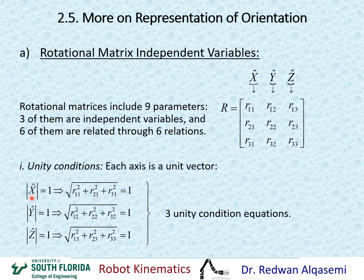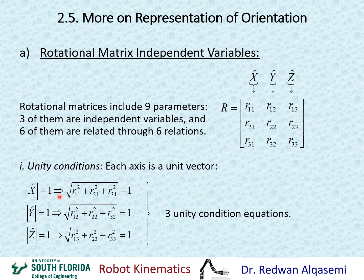The length of X should be one, the length of Y should be one, and the length of Z should be one. To find the length of X, take all the elements of the first column, square them, add them, and take the square root — that must equal one. Same thing for Y: take the second column elements, square them, add them, and take the square root — that should equal one, proving unity of that axis.